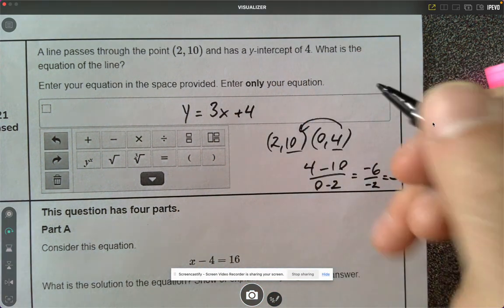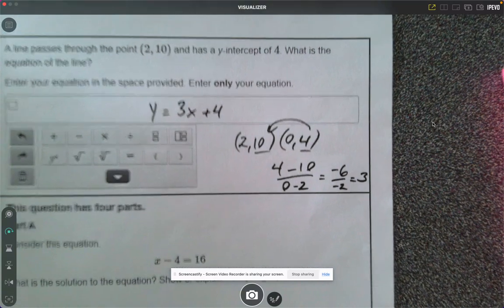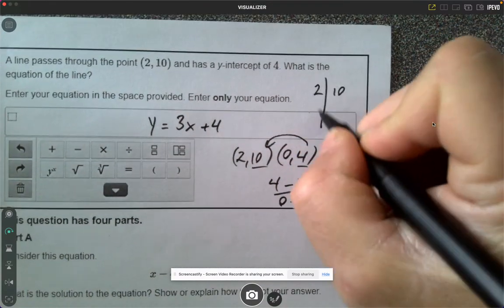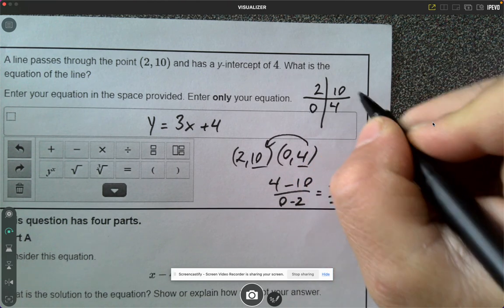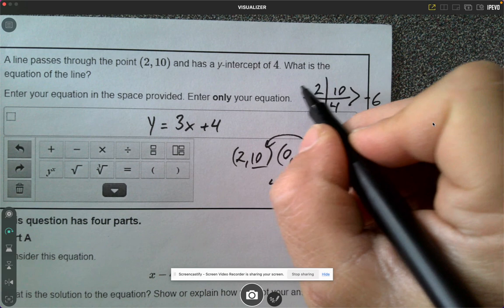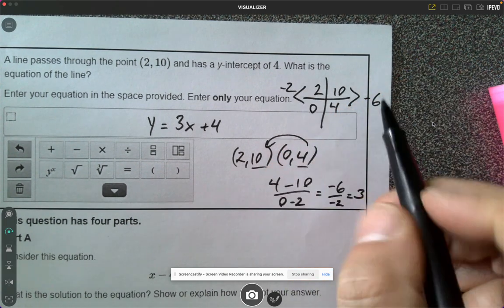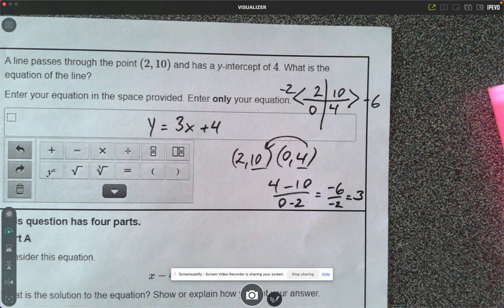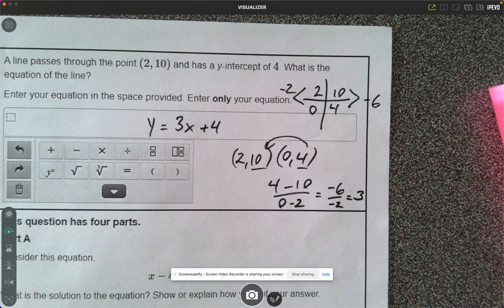So my equation here would be y equals 3x plus 4. Now if you don't like that way of finding slope, there's the table method. I'll just quickly show you. So you go 2, 10, and then you got 0, 4. Your y's go down by 6, your x's go down by 2. Negative 6 divided by negative 2 is still 3.